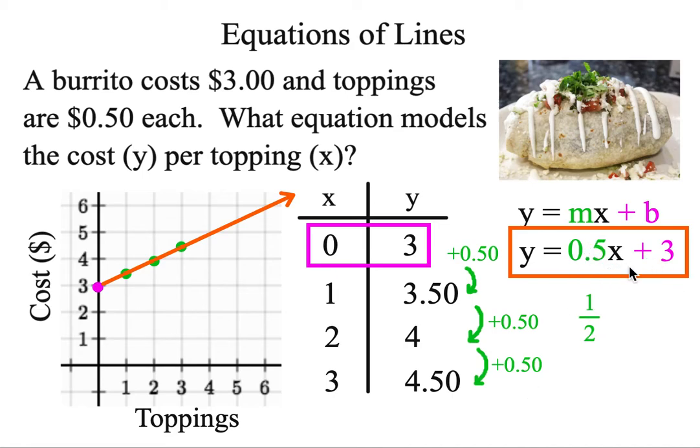Another way to use this model is you can change x to anything you want. Let's say you change x to 4. 0.5 or 1 half times 4. Half of 4 is 2. Plus 3 is 5. That's what y equals now. So that means your cost for four toppings is $5. And it's a way that you can basically make future predictions. That's why these models are helpful.